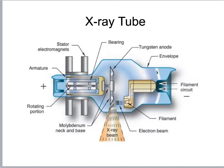Now let's look at the x-ray tube. Going clockwise on a basic diagram: the stator is there to help the anode rotate. It's called the stator because it stays in place — it does not move — but it uses pulsed magnetic fields to cause the anode to rotate.